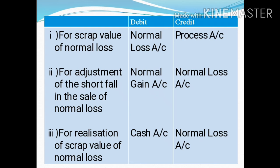For adjustment of the shortfall in the sale of normal loss, Normal Gain Account is debited and Normal Loss Account is credited. And then, for realization of scrap value of normal loss, Cash Account is debited and Normal Loss Account is credited.